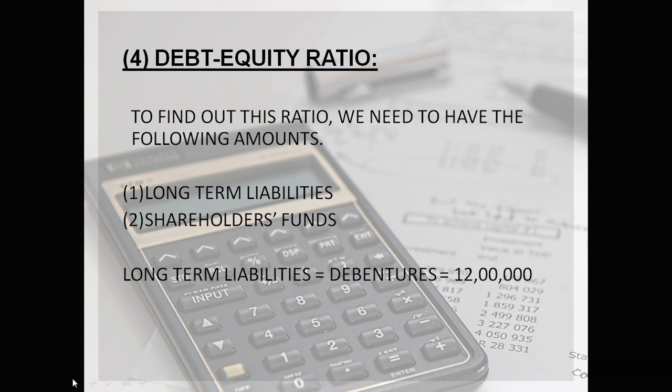This is the first time we are finding out the debt-equity ratio. We need two figures: long-term liabilities and shareholders' funds. Long-term liabilities here consist of debentures only, equal to 12 lakhs. Bank loan is not given in the question, so only debentures are considered as long-term liabilities.